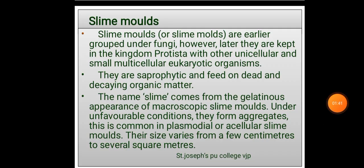Slime molds are earlier grouped under fungi. However, later they are kept in the kingdom Protista with other unicellular and small multicellular eukaryotic organisms.